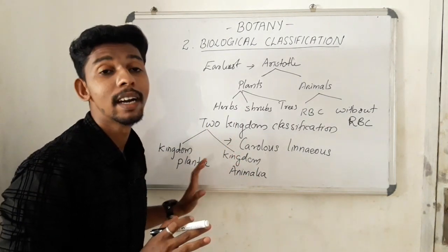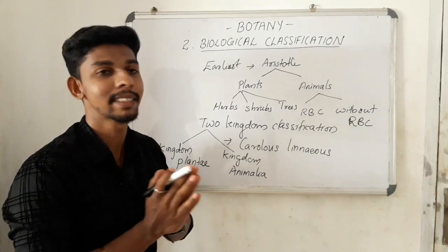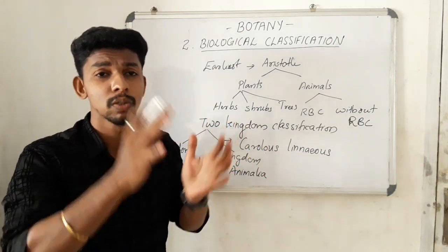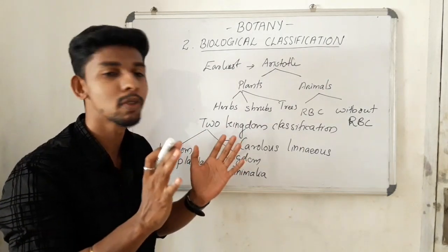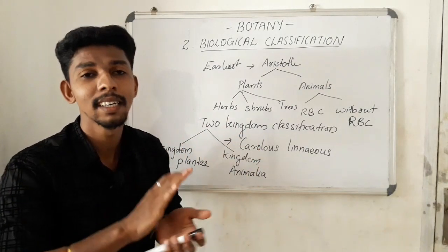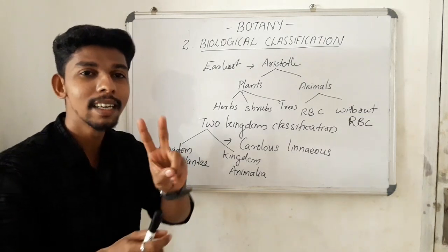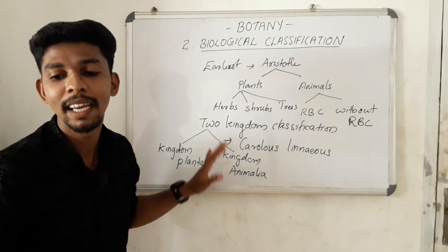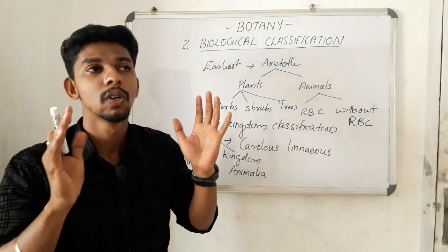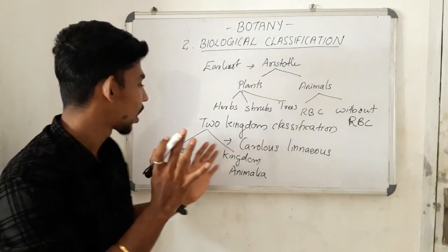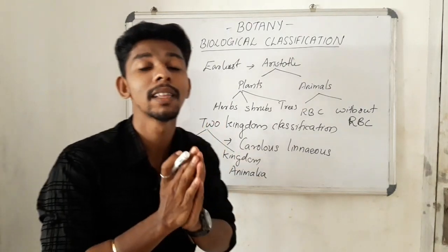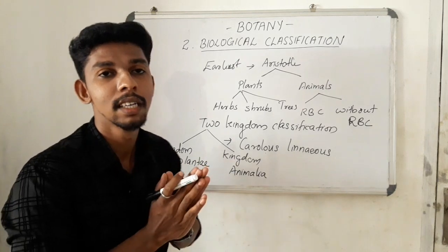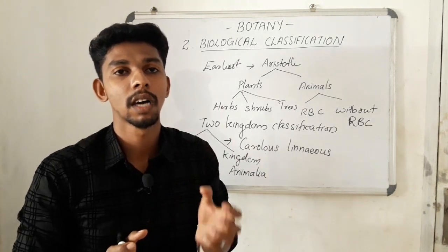However, the two kingdom classification has some problems. There are only two categories: Kingdom Plantae and Kingdom Animalia. If you have a large number of organisms, you can't fit them into just one group. With only two kingdoms, classification becomes insufficient for the diversity of organisms.